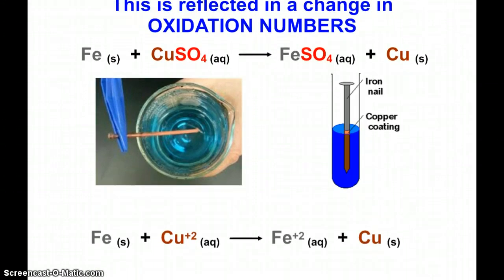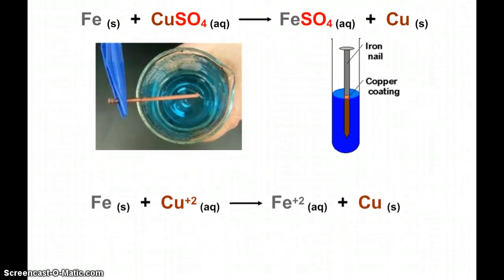Now what we do is we can look at it first. Let's look at the net ionic equation. We see that sulfate is in fact a spectator ion. And so at the core, what's going on here is solid iron is reacting with copper ions to produce iron ions and solid copper.